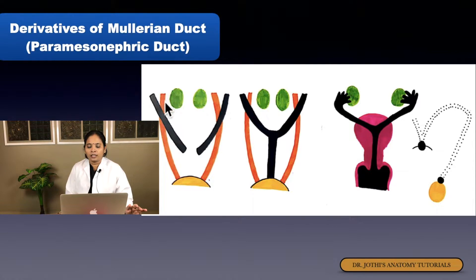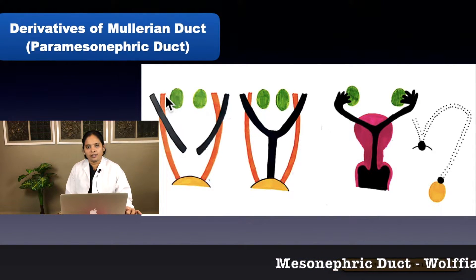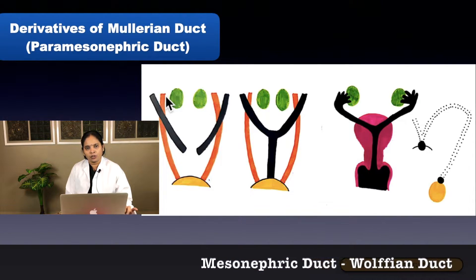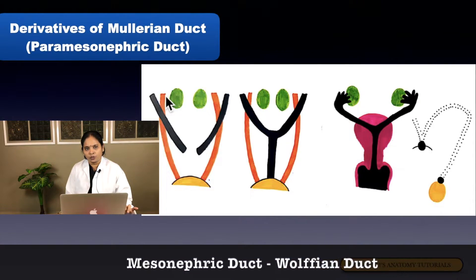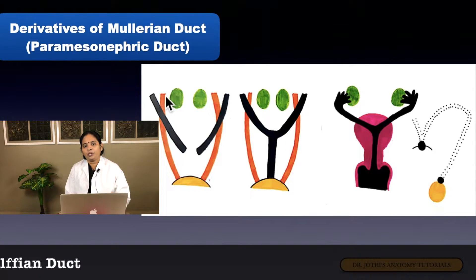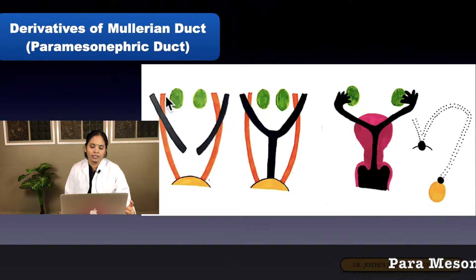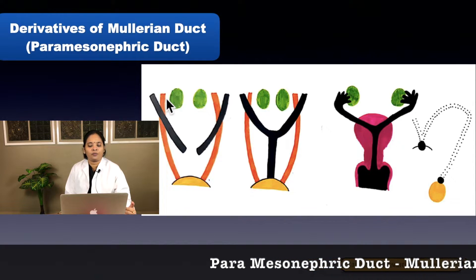In the female, the mesonephric duct and mesonephric tubules disappear. The uterus, uterine tube, and vagina develop from the paramesonephric duct.